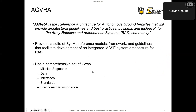AGVRA is the reference architecture for autonomous ground vehicles that provides architectural guidelines and best practices — both business and technical — for the Army Robotics and Autonomous Systems community. Defined by the DoD reference architecture description, a reference architecture provides a common language for various stakeholders, gives consistency of implementation and technology to solve problems, supports validation of solutions against proven reference architectures, and encourages adherence to common standards, specifications, and patterns. AGVRA provides a suite of SysML reference models, frameworks, and guidelines for application of MBSE in robotic autonomous system development.